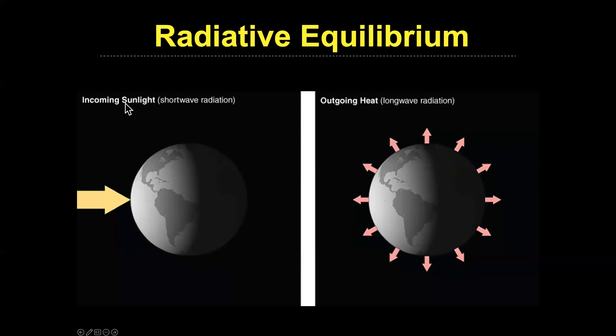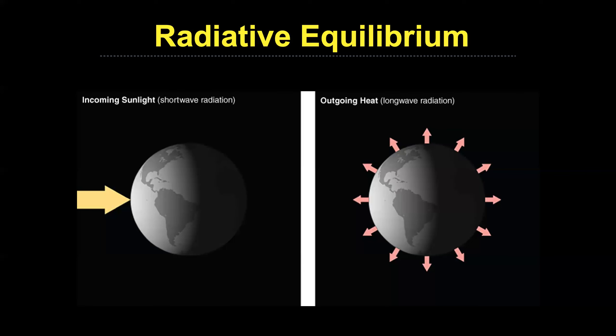Incoming energy from the sun is short-wave energy — visible light. What the earth emits is long-wave energy — infrared — which you can't see because our eyes are not designed to see in that range. Think of our eyeballs as a television set that can only tune to certain channels: we can see the rainbow — red, orange, yellow, green, blue, indigo, violet — but anything beyond red is infrared, and anything beyond violet is ultraviolet. We can't see either of those.